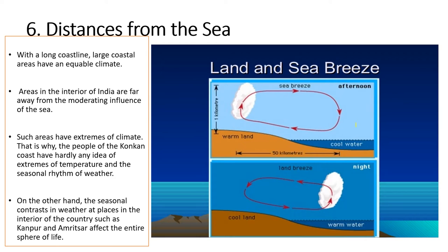Sea breezes create healthy conditions and reduce the temperature by 8 to 12 degrees Celsius, making it easier to live in those areas. The night situation is the land breeze situation, as we have just described.